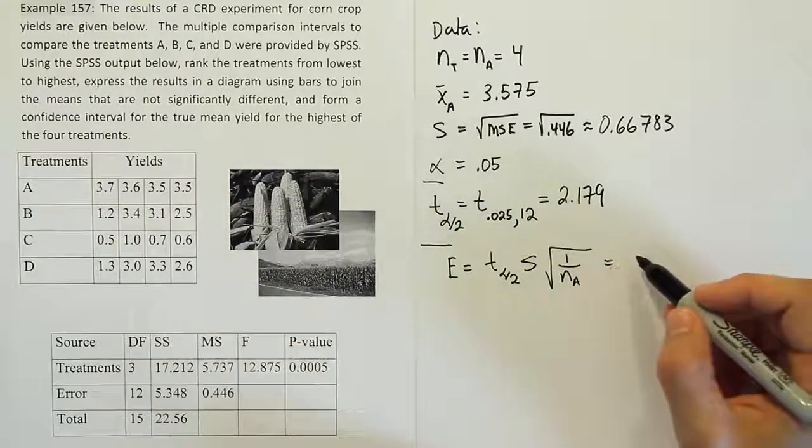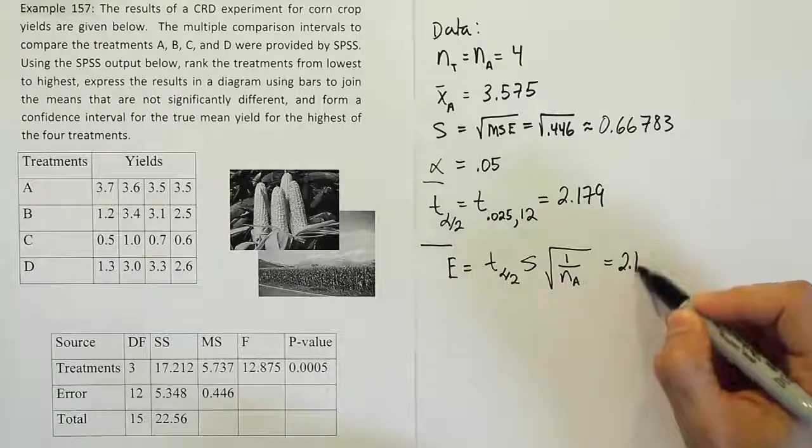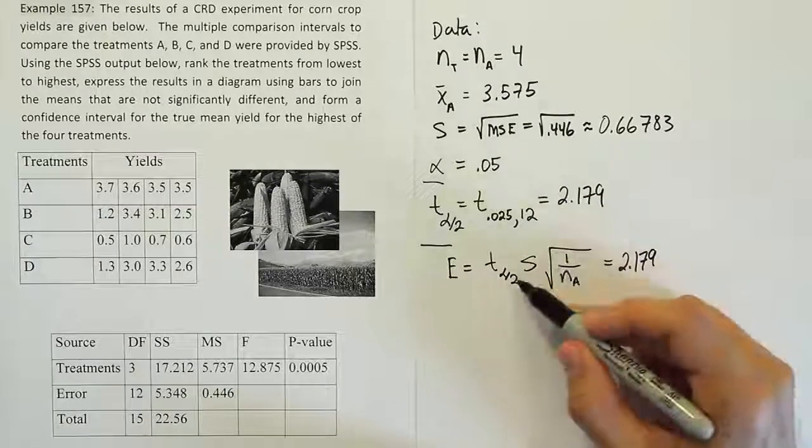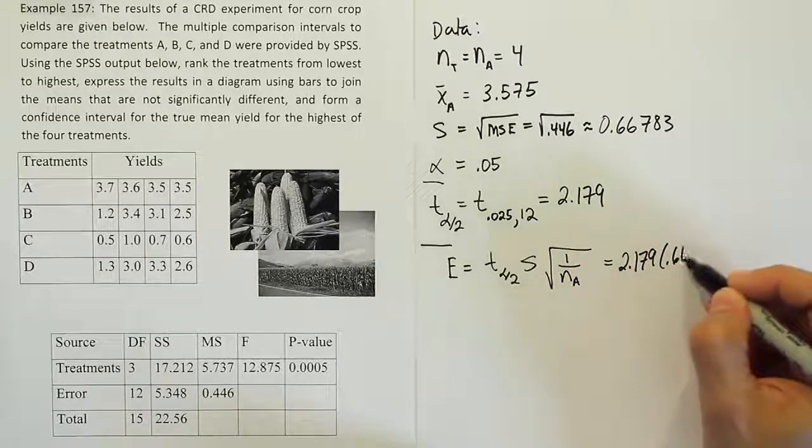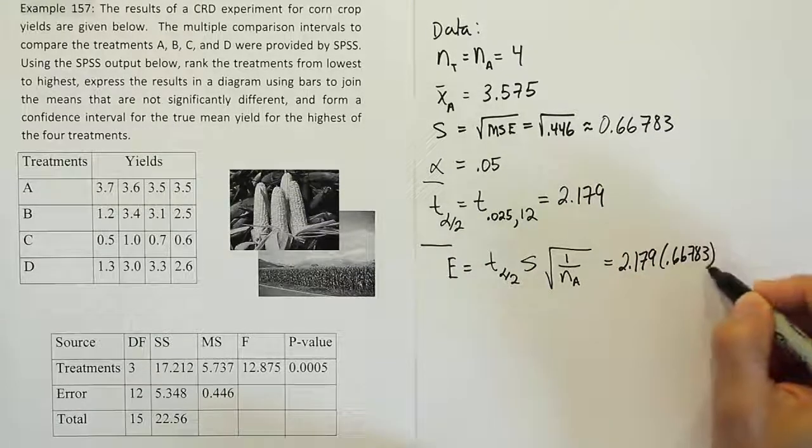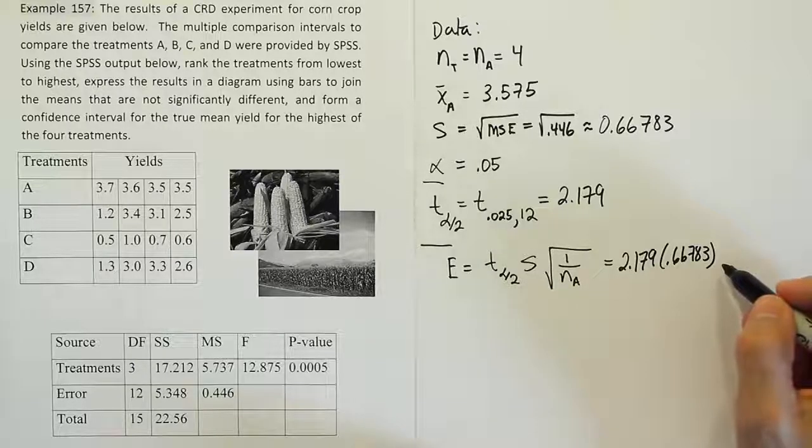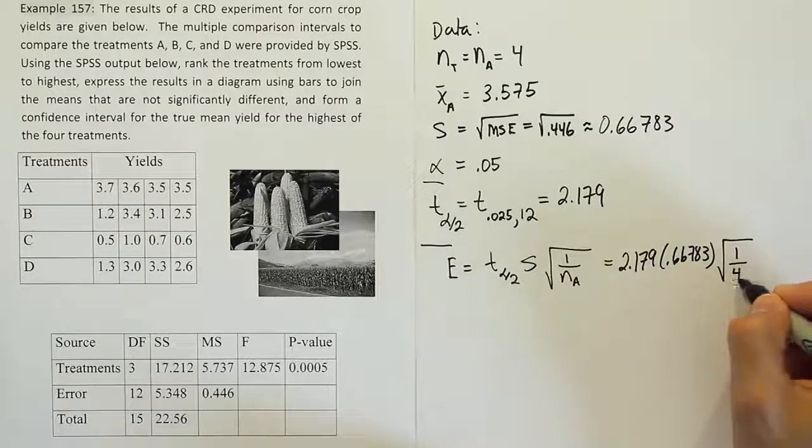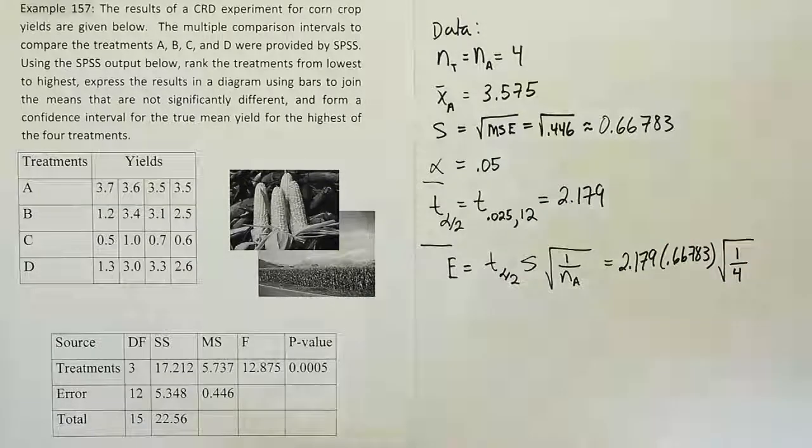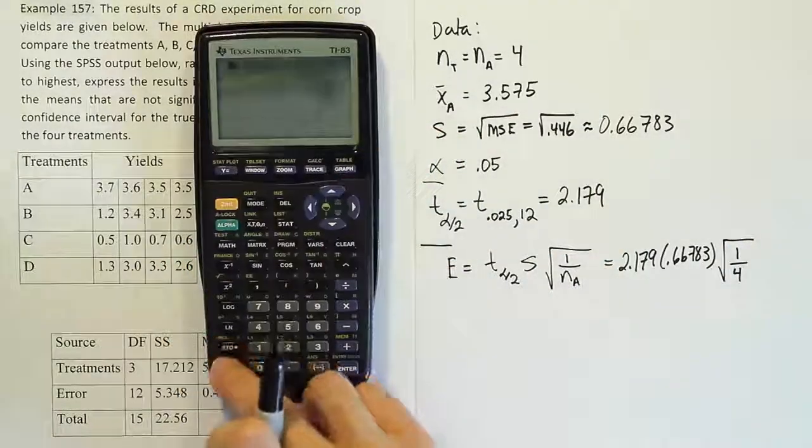Okay, so when we do that, we're going to have 2.179 times S. S was 0.66783. And then lastly, we'll divide by the square root of 1 fourth. The square root of 0.25. Okay, let's put all that in our calculator then.